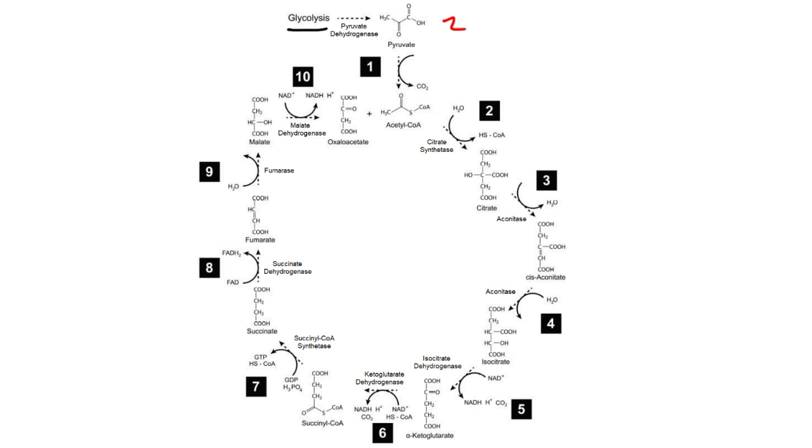Acetyl coenzyme A enters the Krebs cycle where it reacts with oxaloacetate to produce citrate. The enzyme that catalyzes that reaction is citrate synthase. It synthesizes citrate from this four-carbon molecule, oxaloacetate, and the two-carbon acetyl part of acetyl coenzyme A. So we get a six-carbon molecule.